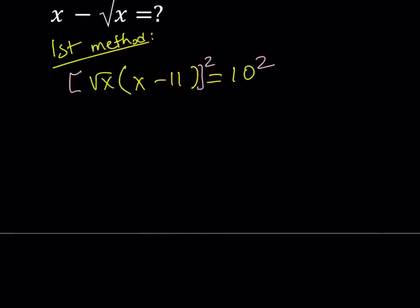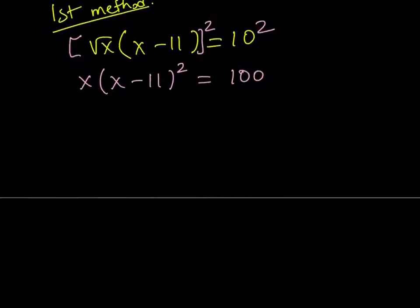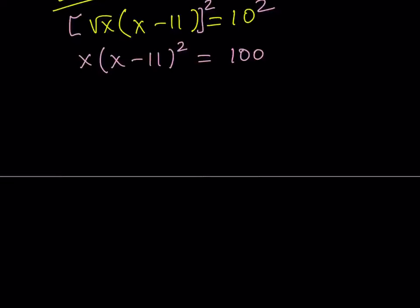And this is a product, so the square of that is going to be the product of squares, which is x(x - 11)² = 100, at least in base 10.